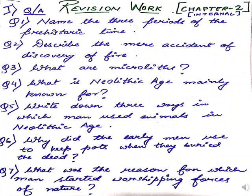Question 1 is: name the 3 periods of prehistoric time. You are going to write from the very first page of that chapter — the Stone Age chapter 2, page number 6. There are 4 given, but the 4th, Chalcolithic, is part of Neolithic only. So we will write the first 3: Paleolithic Age or Old Stone Age, then Mesolithic Age or Middle Stone Age, and Neolithic Age also known as New Stone Age.